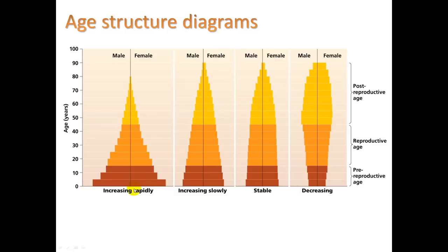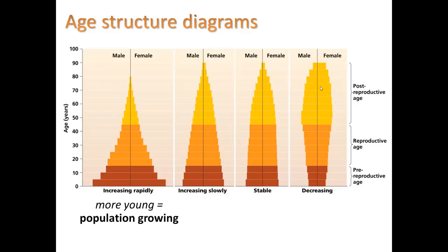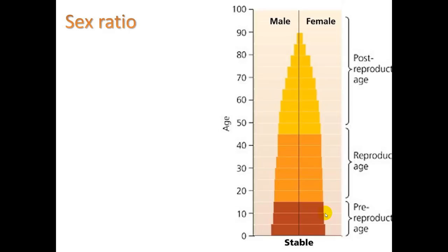If we have a wide-based pyramid shape, we can say it is a population that is probably increasing rapidly, because there are so many young present — all these will become reproductive members in about 15 years. A still-bottom-heavy pyramid means increasing, but more slowly. A more even structure means a stable population with roughly equal numbers in each age bracket. A top-heavy shape — fewer young than old — indicates a decreasing population. More young equals a wider base equals population growing; more old equals top-heavy equals population declining.